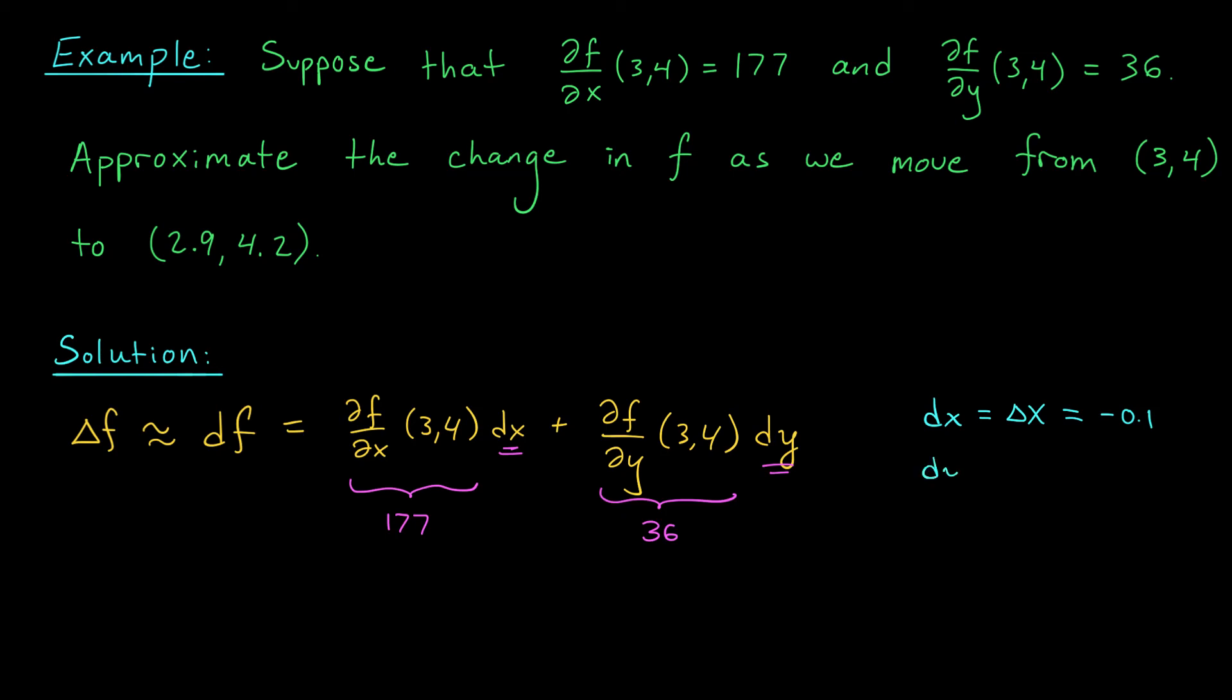Dy, on the other hand, is equal to delta y, which in this case is plus 0.2. By moving from (3, 4) to (2.9, 4.2), my y value increases by 0.2. This means that our approximate change in the value of the function is 177 times minus 0.1 plus 36 times 0.2.